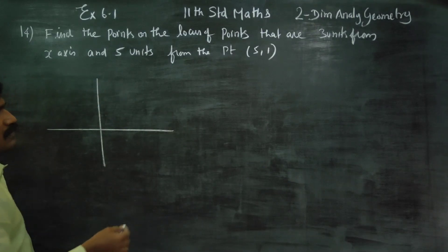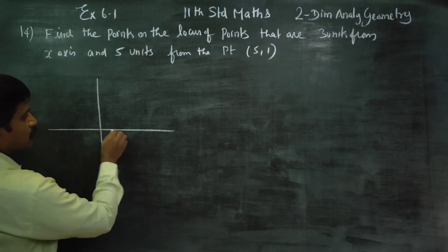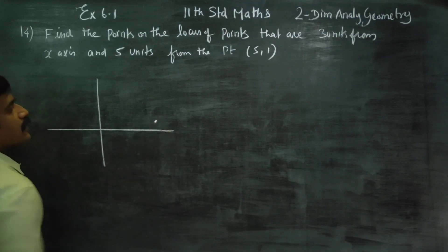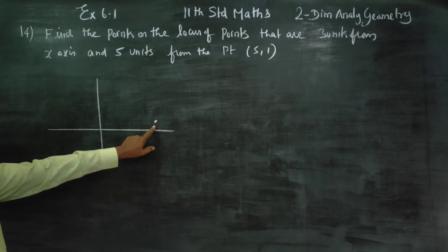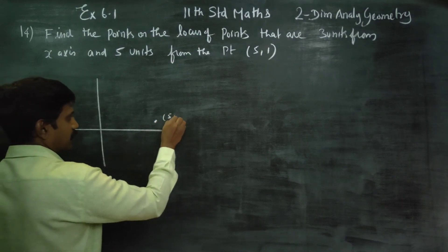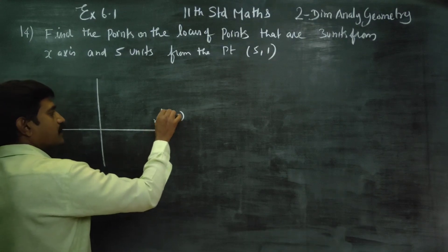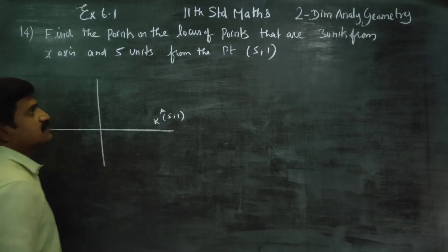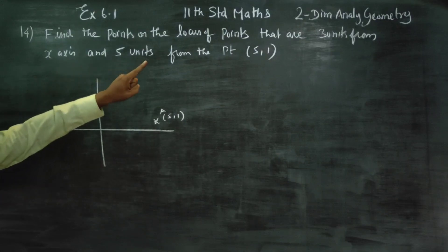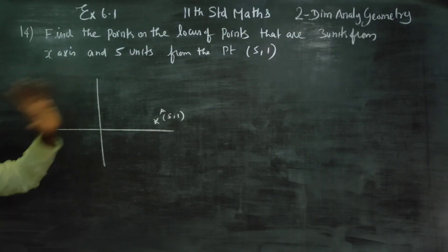The point (5,1) is given. For example, plotting 1, 2, 3, 4, 5 — the point (5,1) is there. This is a fixed point. Find the locus of the points; one point is a moving point.